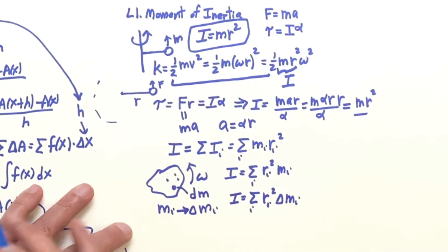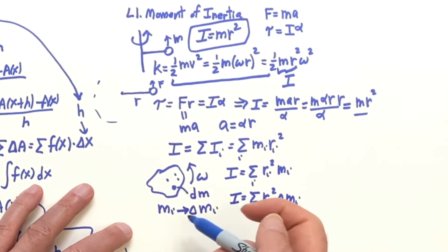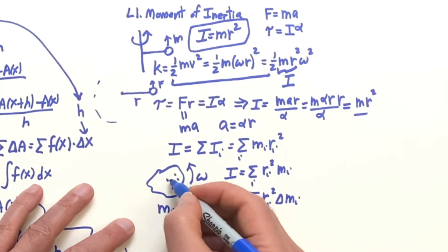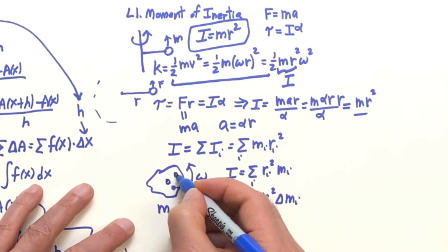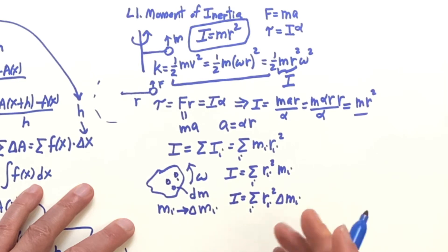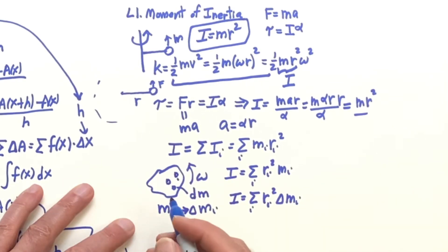Now what about here, like if it's continuous distribution of matter, then we can consider it as a sum of all these little delta M's and we want to go to the calculus formula. Now I have an easy way to understand how to go from summing finite deltas to some continuous integral.